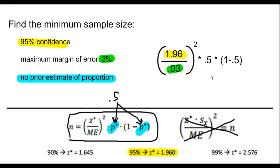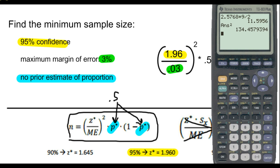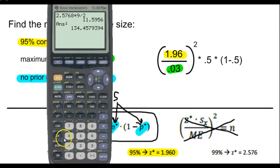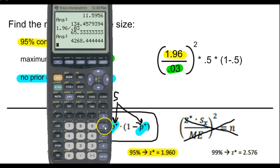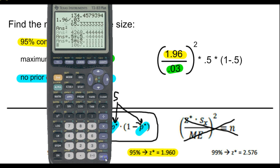So essentially, if you have a better guess than 0.5, it'll allow you to have a smaller sample size. So in this case, we don't. So let's just go ahead and plug this into our calculator. We have 1.96 divided by 0.03. And I always like to do that calculation right away. Square it right away. And then do my multiplying by 0.5 and 0.5 again. So I get this 1067.1 repeating.